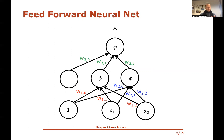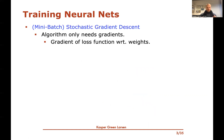What we're going to look at in this video is the basic algorithm for training such a neural net. The training of neural nets will be based on stochastic gradient descent, which we already saw in previous videos — in particular for logistic regression, and also briefly for linear regression as an alternative training algorithm.